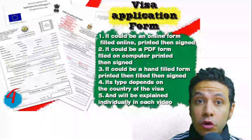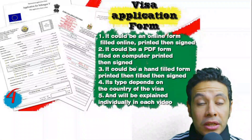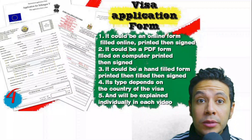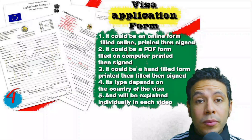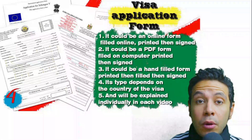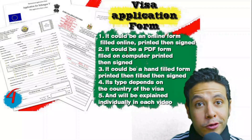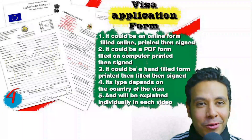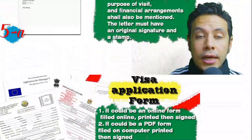For the visa application form, you generally need one copy, but sometimes two or three copies are required. Forms differ from country to country — in general you print and fill it manually, but many countries now provide an online platform where you can fill the form online and then print and sign it.